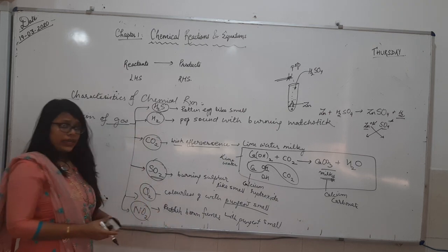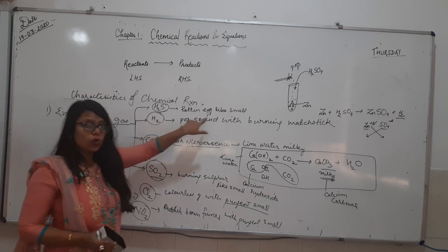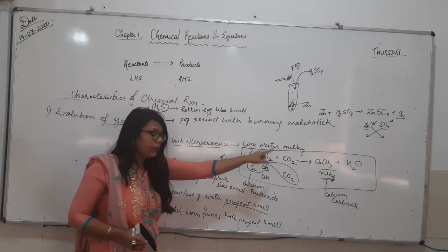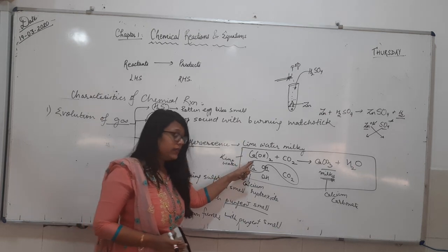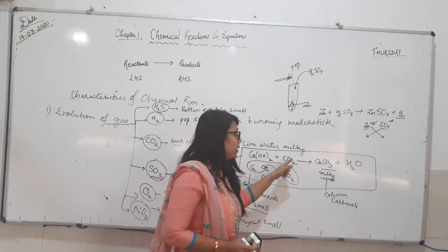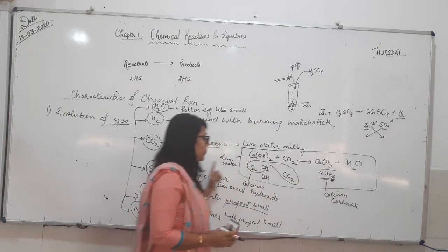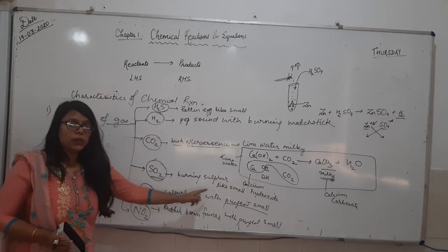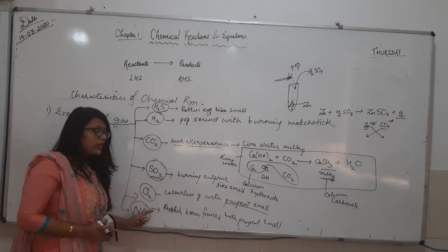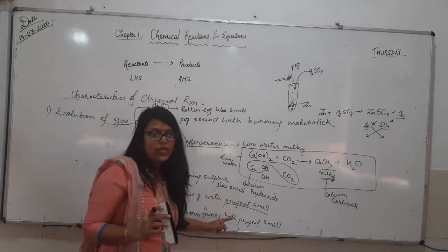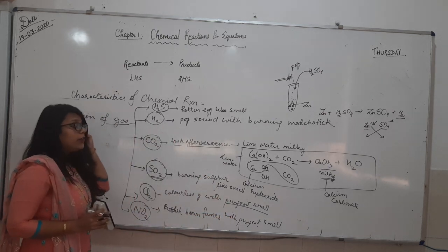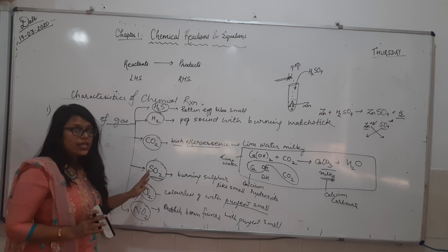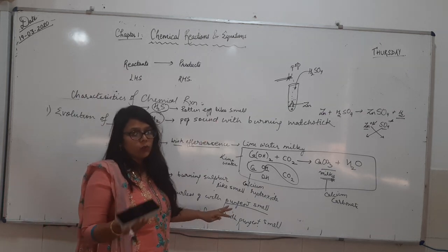So these are the gases — again repeating: First, hydrogen gas produces a pop sound with a burning matchstick. Next, CO2 produces brisk effervescence and turns lime water milky: Ca(OH)2 + CO2 gives CaCO3 and H2O. Burning sulphur-like smell is due to sulphur dioxide. Colourless gas with pungent smell is chlorine — Cl2. Reddish brown gas with pungent smell is NO2 — nitrogen dioxide. And rotten egg-like smell is H2S.